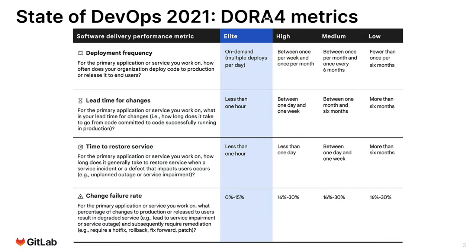There are a total of five metrics, which are the following four plus availability. These metrics can be used as a common way or an industry standard to compare how well organizations are doing, but they can also help leaders and teams measure and improve what matters in relation to their software delivery and performance.